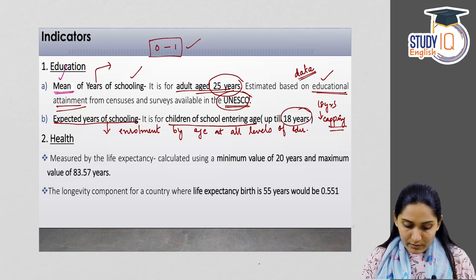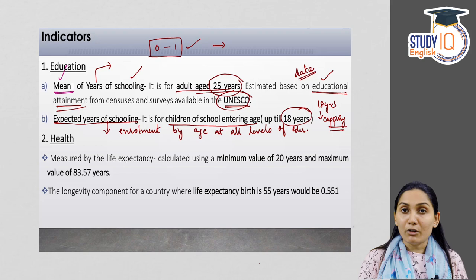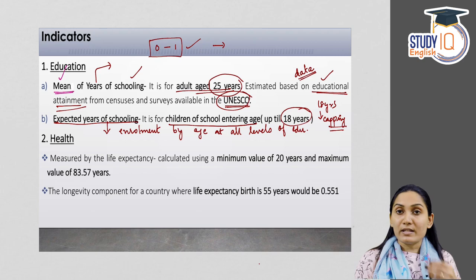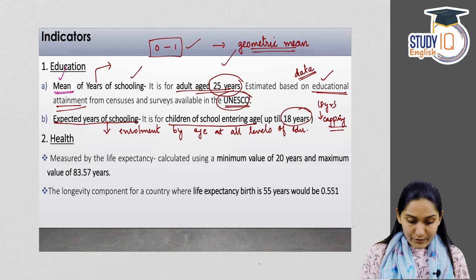Each sub-indicator is given minimum and maximum values. The Education Index under the Human Development Report is calculated as the geometric mean of both sub-indices — mean years of schooling and expected years of schooling. The geometric mean of these two indices is taken in order to calculate the overall Education Index.